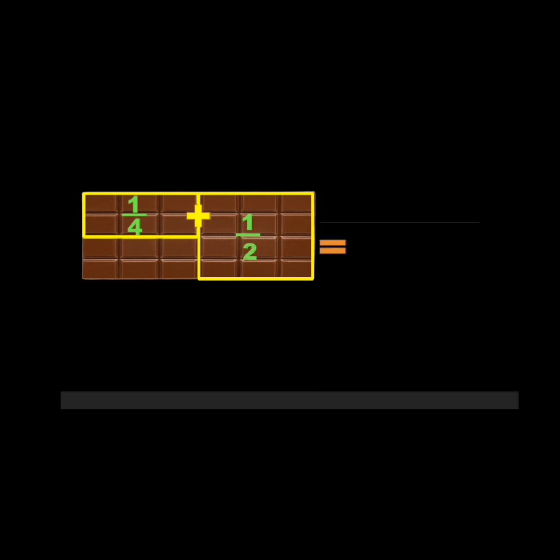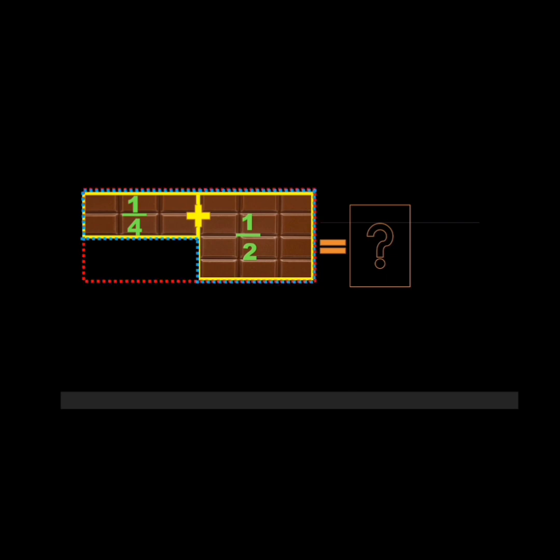Now, addition of unlike fractions — as you know, unlike fractions means the denominators are different. Here one fourth of the chocolate bar is added to one half of the chocolate bar. What sum are we getting? How much of the total chocolate bar is the combined part out of the whole?